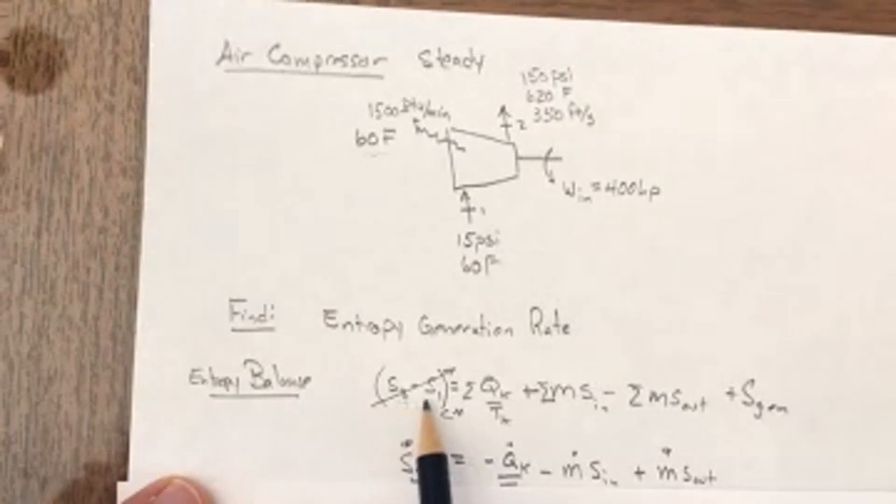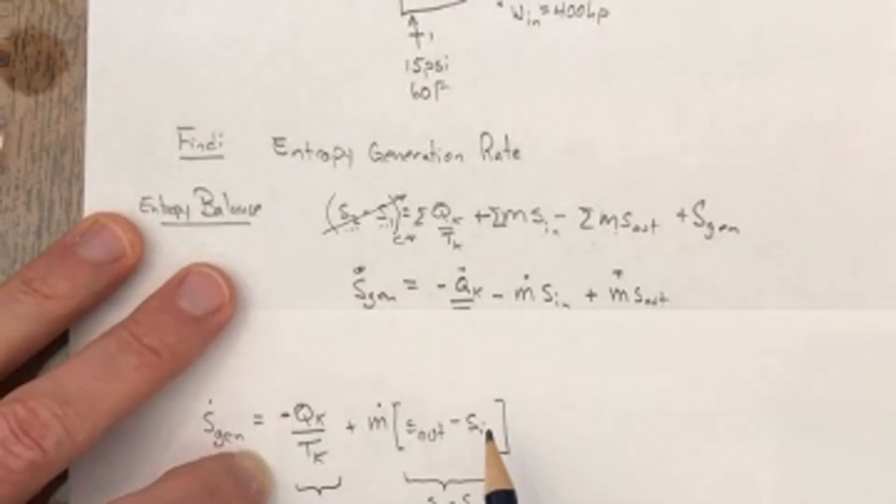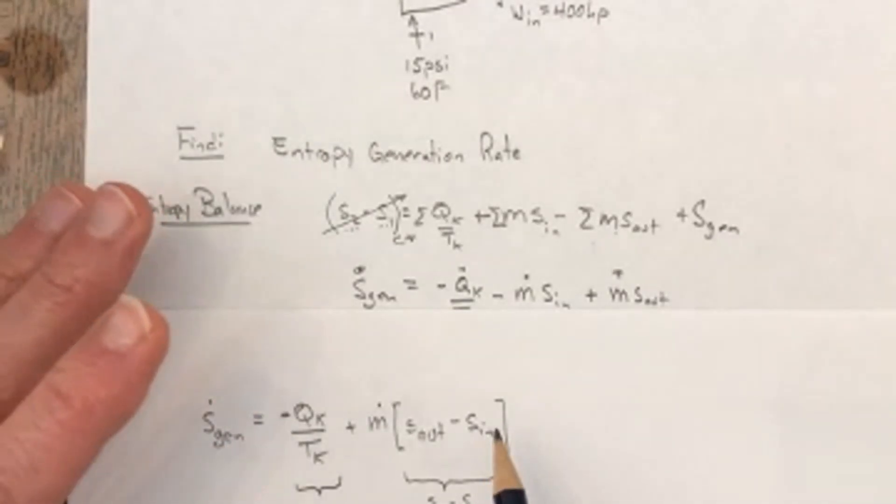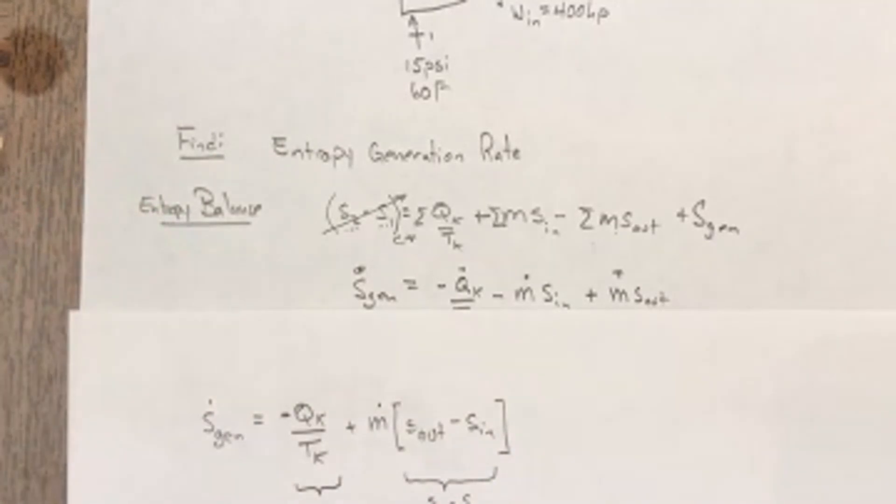But when we write things like what's the entropy change for an ideal gas, we typically write them as two minus one state, this state minus that state, whatever it is, whether it's in the control volume or the ins and outs. So that's also a source of confusion just because of the nomenclature.